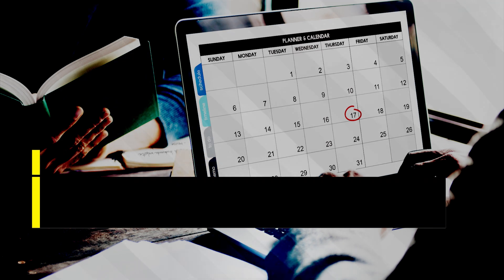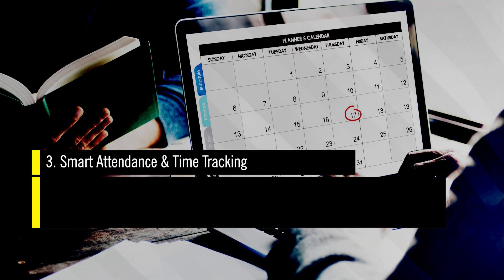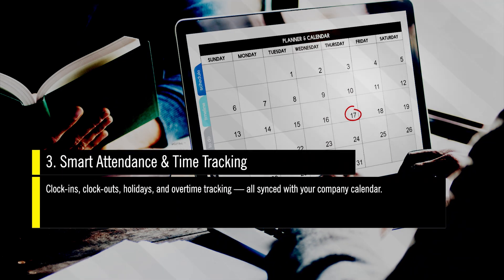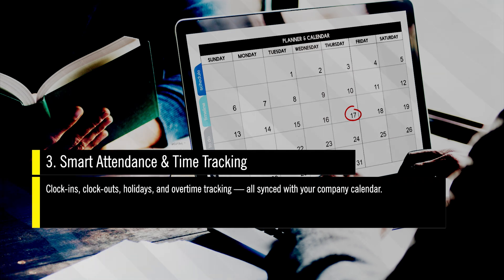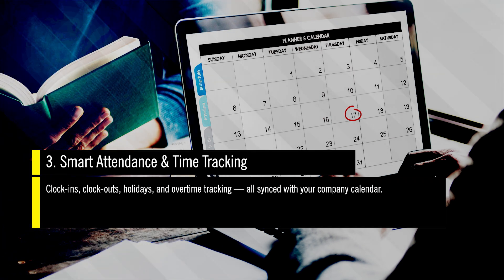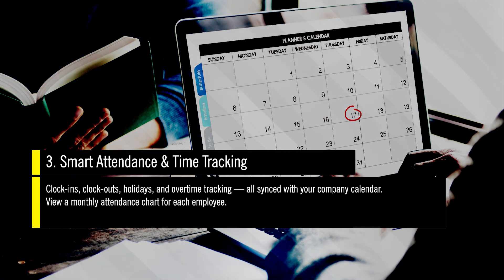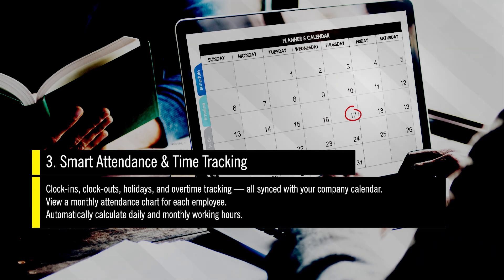In Smart Attendance and Time Tracking, clock-ins, clock-outs, holidays, and overtime tracking are all synced with your company calendar. View a monthly attendance chart for each employee and automatically calculate daily and monthly working hours.